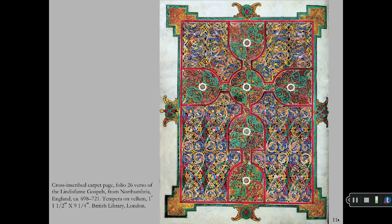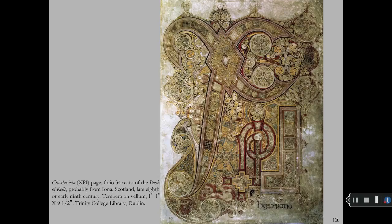The carpet page from the Lindisfarne Gospels is a combination of geometric shapes and interlaced patterns painted with tempera on vellum. The Book of Kells is an outstanding example of the style art historians named Hiberno-Saxon. Hibernia is the Roman name of Ireland, and this is insular or monastic art of the Irish-English islands.